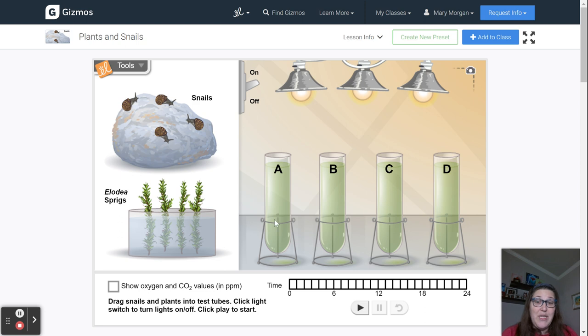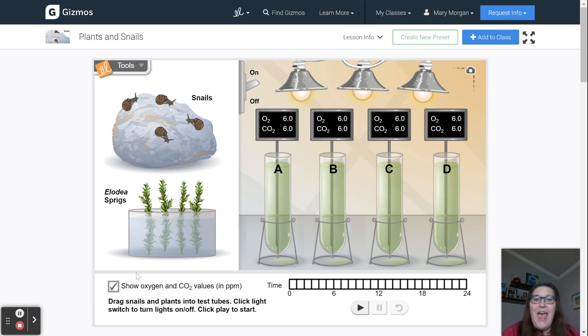To collect data, you'll need to know how much oxygen and how much CO2 is being produced in each tube. The oxygen and carbon dioxide is measured in parts per million, which is abbreviated as ppm. To view this data, you'll click on the checkbox in the bottom left-hand corner of the screen, and a little marker will show it for each test tube, giving you the amount of oxygen and CO2 in that test tube.